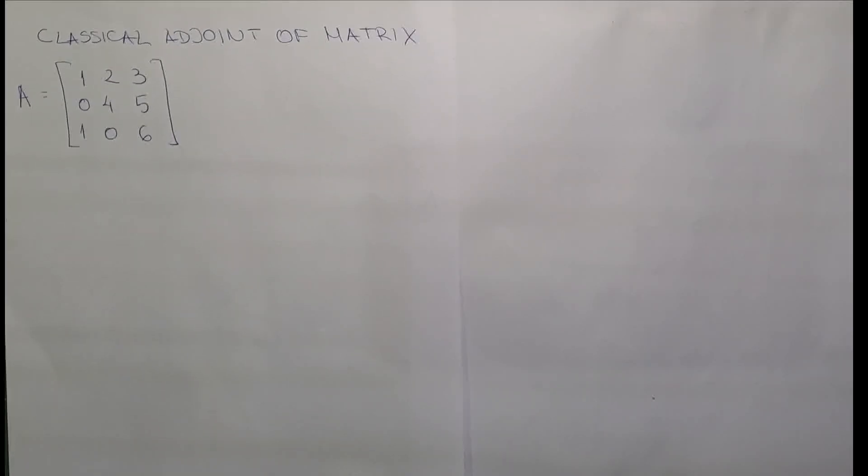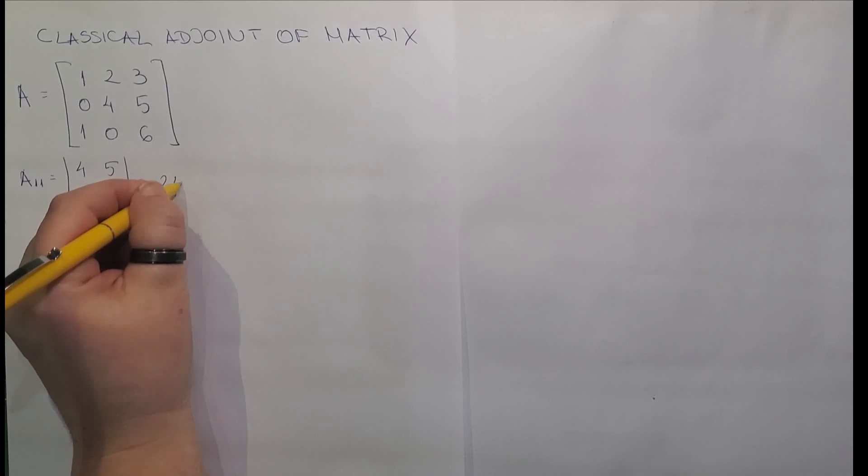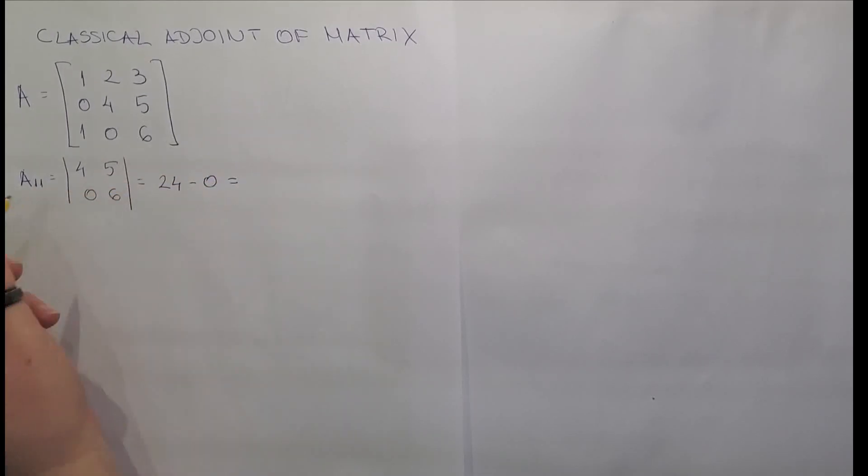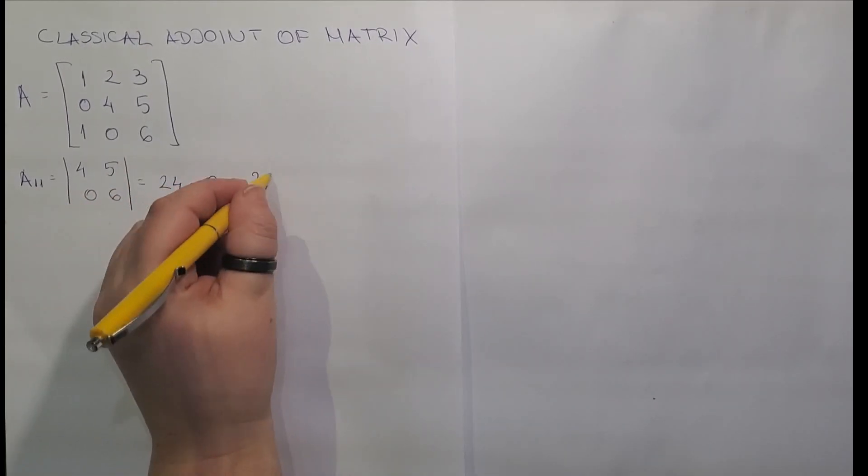So now let's begin. We have element a11, which means we are eliminating first row and first column and we have left with 4, 5, 0, 6.